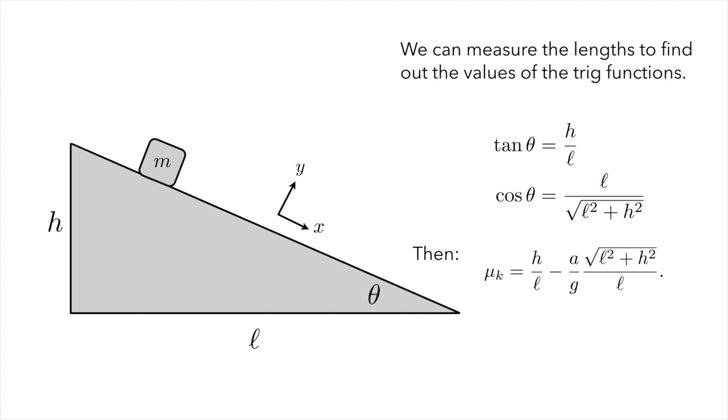If we substitute those in to our coefficient of kinetic friction expression, we get the final result that we see here. Our basic approach is going to be to measure these lengths and then use video analysis to determine what the acceleration a is. We will assume that g equals 9.81 meters per second squared in this experiment.